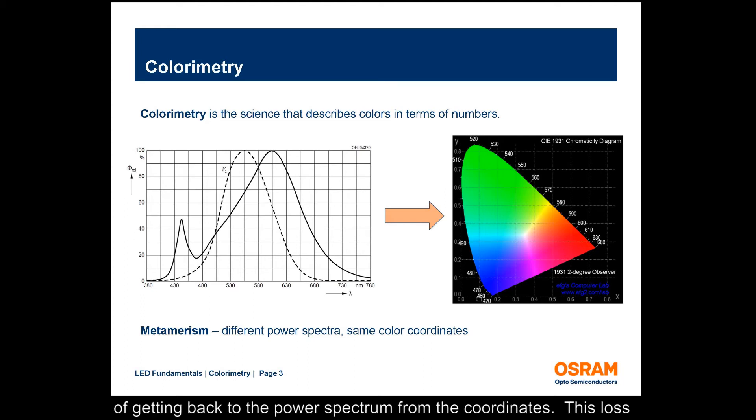There is no way of getting back to the power spectrum from the coordinates. This loss of information can lead to a condition called metamerism, in which different power spectra can produce the same color coordinates.